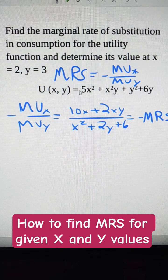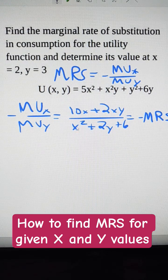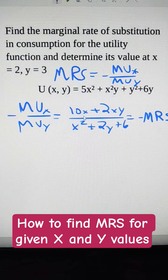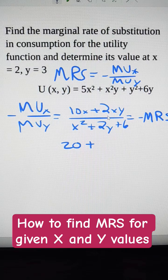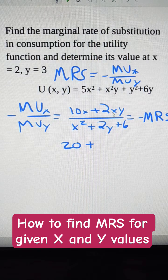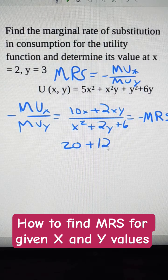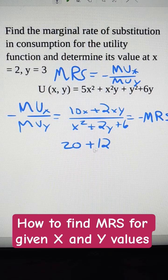Now I'm just going to plug in all of these numbers. I end up with: this becomes 20 plus 12, which is 2 times 6.